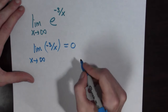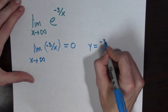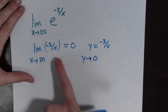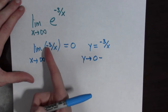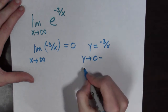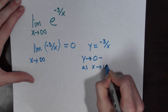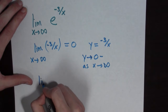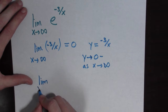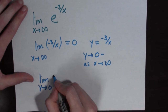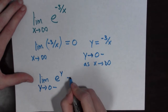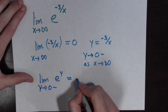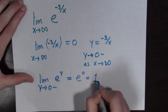In fact, we could say if we set y equal to negative 3 over x, we could say that y goes to zero. It goes to zero from the left because this is negative as x goes to infinity. And now what we can do is we can rewrite this as the limit as y goes to zero from the left of e to the y. And this e to the y is continuous, so this is equal to e to the zero, which is equal to 1.